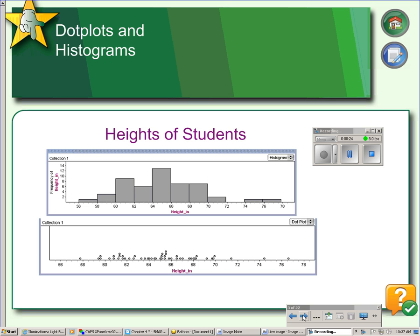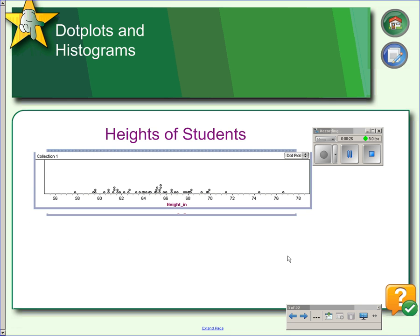Another example would be heights of students. So the simplest way to display numerical data or quantitative data is with the dot plot. This is a dot plot of heights of students.